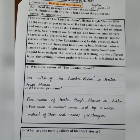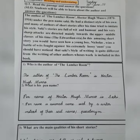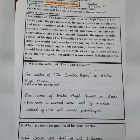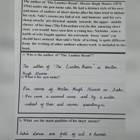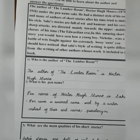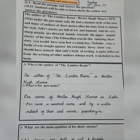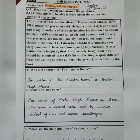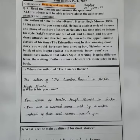Question number three: what are the main qualities of his short stories? Saki's stories are full of wit and humor — those were the main qualities. You can write further as well, but these are the main ones. Wit stands for intelligence, and humor stands for the sense of being sarcastic and funny at the same time. That's it — see you tomorrow.